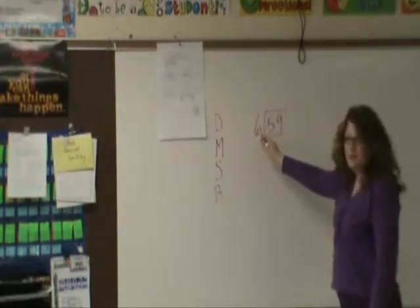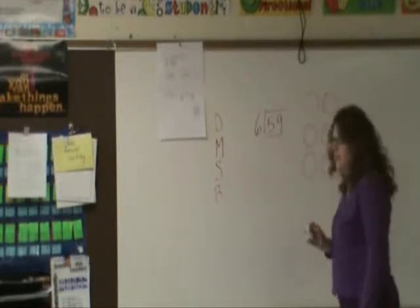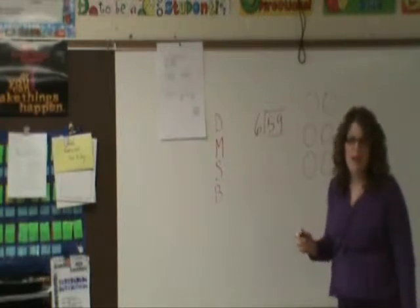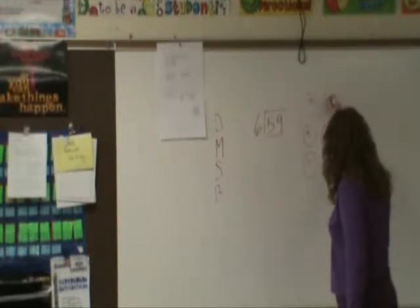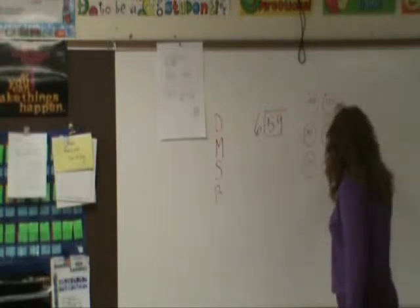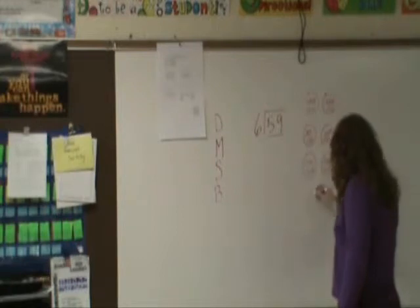I have 59 and I have 6 groups, so I make my 6 groups and I put the 59 things in those groups. I count out 1, 2, 3 … distributing items one at a time across the 6 groups, counting all the way up through 54, 55, 56, 57, 58, and 59.